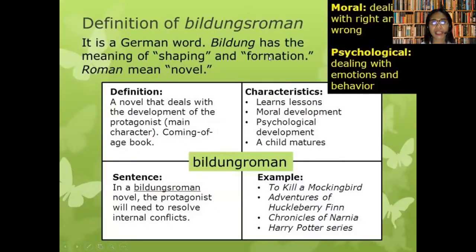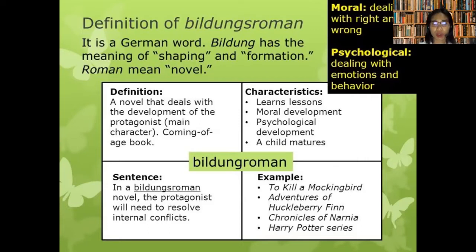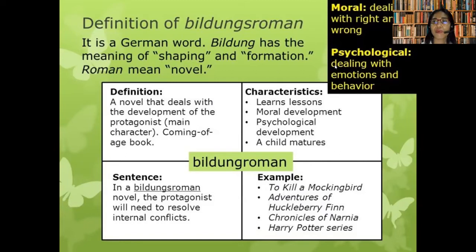In German, 'Bildung' means shaping and formation, and 'Roman' means novel. A Bildungsroman deals with the development and coming of age of the protagonist, involving moral development, psychological development, and the maturity of a child who must resolve internal conflict. Examples include To Kill a Mockingbird, Adventures of Huckleberry Finn by Mark Twain, Chronicles of Narnia, and the Harry Potter series.